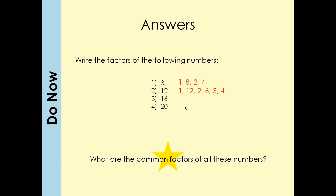For 12 that's going to be 1, 12, 2, 6, 3 and 4. For 16 that's going to be 1, 16, 2, 8 and 4. And for 20 that's going to be 1, 20, 2, 10, 4 and 5.